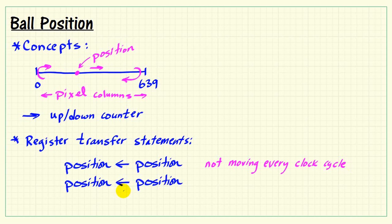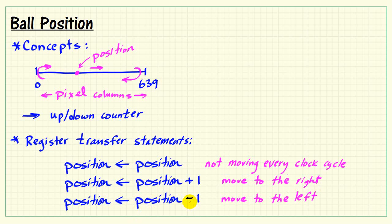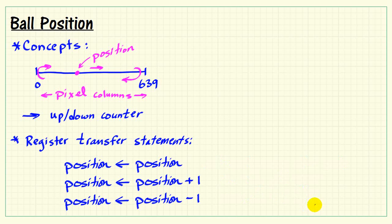In terms of formulating our register transfer statements, we need to say position gets position because it's not moving every clock cycle. Sometimes it moves to the right with an increment, and sometimes it moves to the left with a decrement. That takes care of all the possible ways that position needs to change.